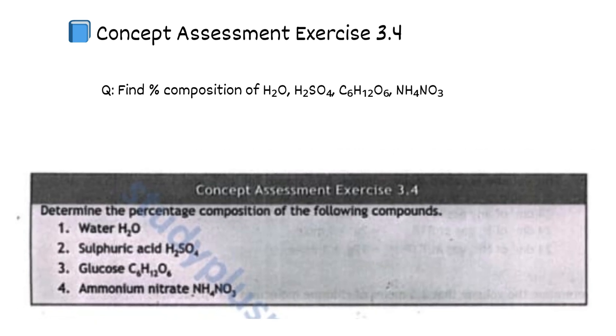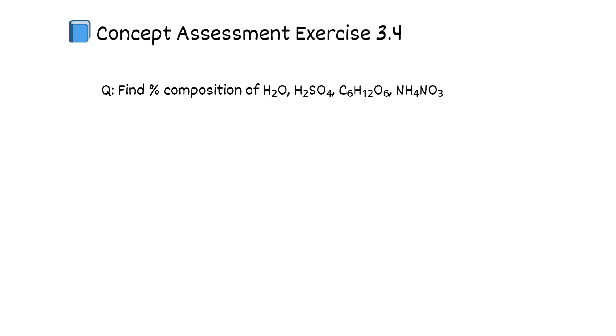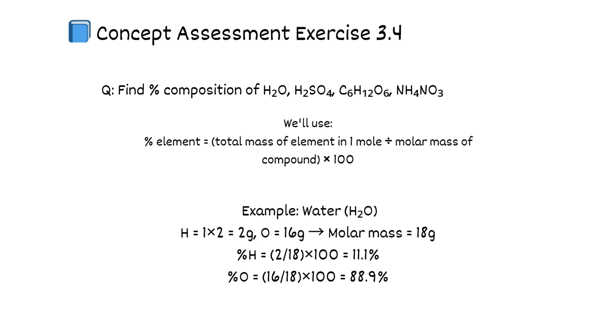Exercise 3.4. Find percent composition of H2O, H2SO4, C6H12O6, NH4NO3. We'll use: Percent element equals total mass of element in 1 mole divided by molar mass of compound times 100. Example: Water H2O. H equals 1 times 2 equals 2 grams. O equals 16 grams. Molar mass equals 18 grams. Percent H equals 2 over 18 times 100 equals 11.1 percent. Percent O equals 16 over 18 times 100 equals 88.9 percent. You can repeat similar steps for the rest.